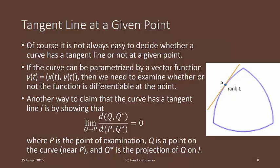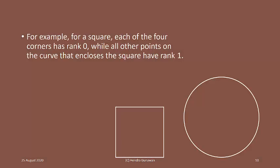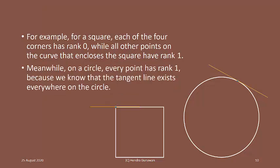So, imagine p, which is of rank 1, is there, and q and q star is around that point. For example, for a square, each of the four corners has rank 0, while all other points on the curve that encloses the square have rank 1. So, this point cannot be approximated well by any line. Meanwhile, on a circle, every point has rank 1, because we know that the tangent line exists everywhere on the circle.